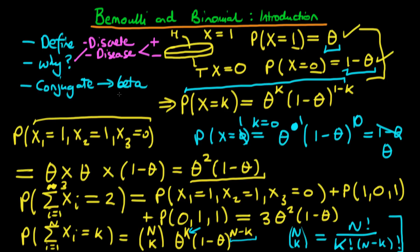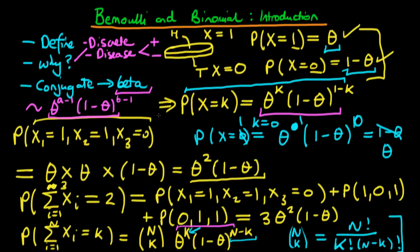Finally, the conjugate prior to these likelihoods is the beta distribution, which we'll cover in the next video. The beta distribution has the form theta to the power a minus 1 times 1 minus theta to the power b minus 1. This has the same functional form as both the binomial and Bernoulli cases — theta to the power of something times 1 minus theta to the power of something else. So when we multiply this prior by the likelihood in the numerator of Bayes' formula, we get a posterior of the same form as the prior, confirming that the beta distribution is conjugate to both the binomial and Bernoulli distributions.